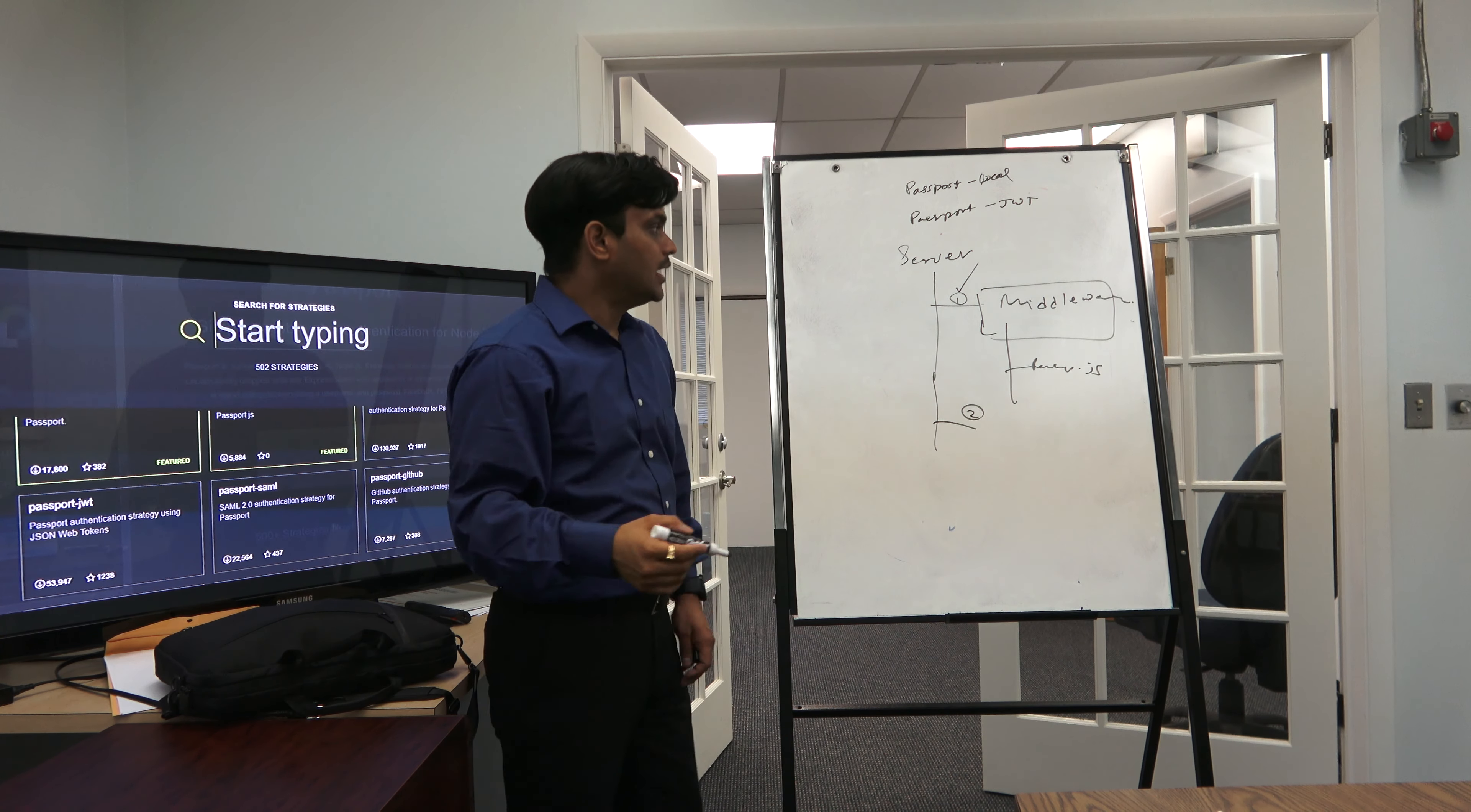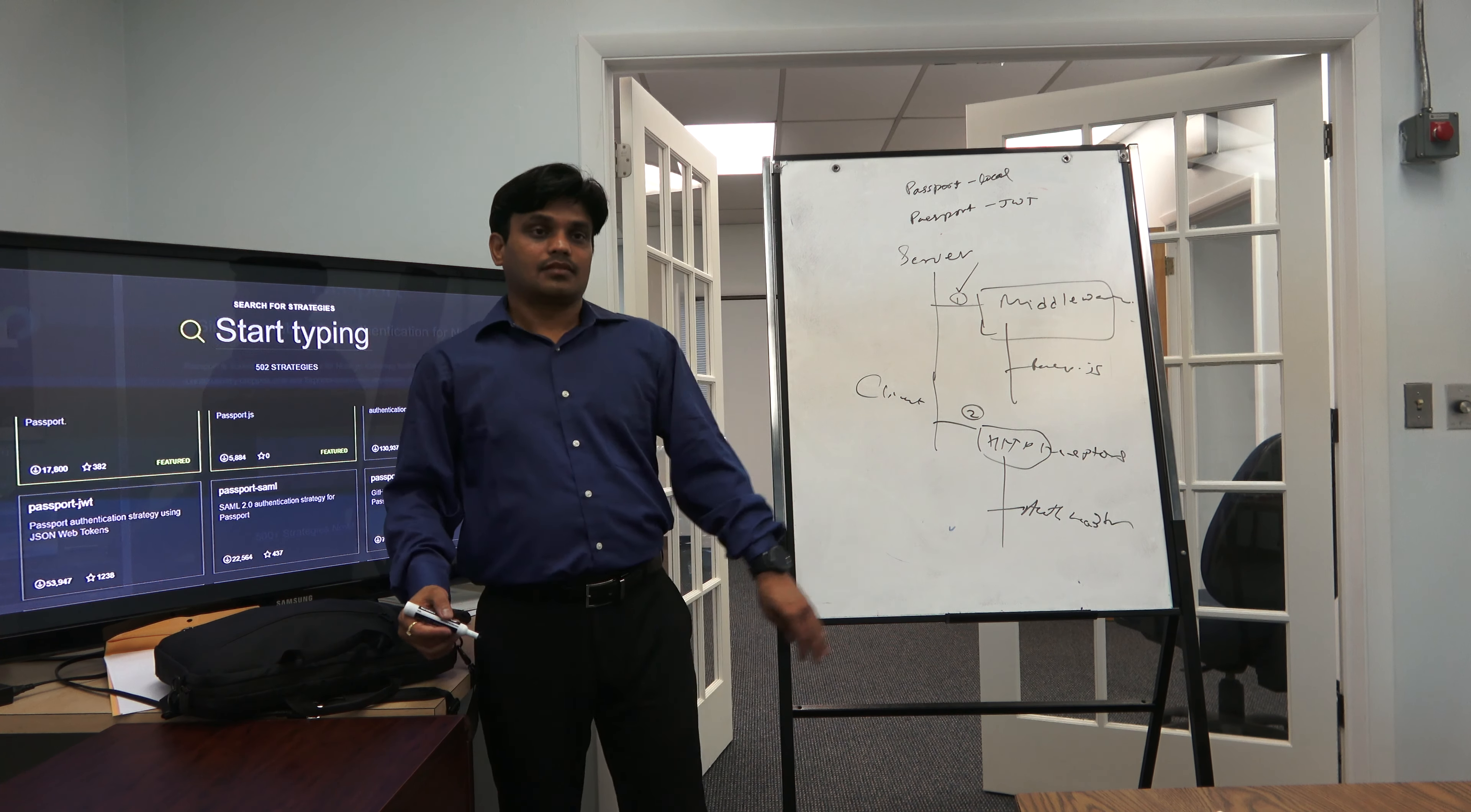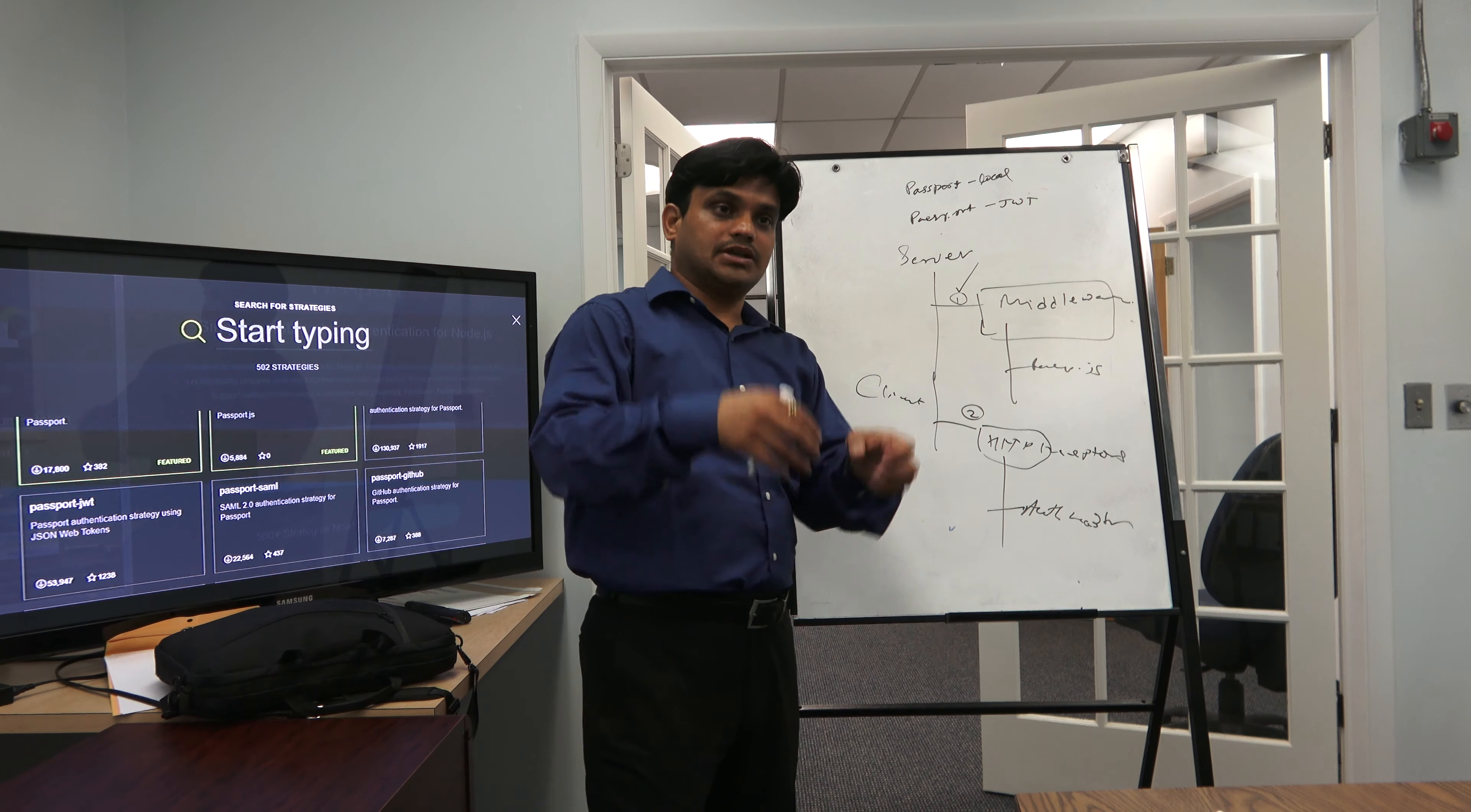Similarly, in the client side we will create a folder called HTTP interceptor. We will introduce one HTTP interceptor called auth header interceptor.js or .ts, and there we will do the interceptor logic. This is client side interceptor, this is server side middleware. Here goes Passport related stuff, here goes all Angular stuff which takes the request and puts the token.